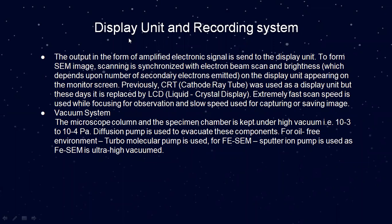The last point: display unit and recording system. The output in the form of an amplified electronic signal is sent to the display unit to form the scanning electron microscope image. Scanning is synchronized with the electron beam scan, and brightness depends upon the number of scintillator electrons emitted, appearing on the monitor screen. Previously, a CRT (cathode ray tube) was used as a display unit, but these days it is replaced by an LCD (liquid crystal display). Extremely fast scan speed is used while focusing, and slow speed is used for capturing or saving images. The microscope column and specimen chamber are kept under high vacuum of 10⁻³ to 10⁻⁴ Pascal. A diffusion pump is used to evacuate these components for an oil-free environment.